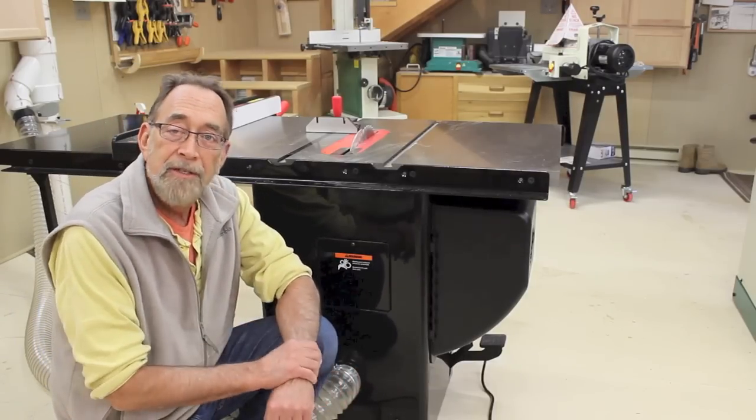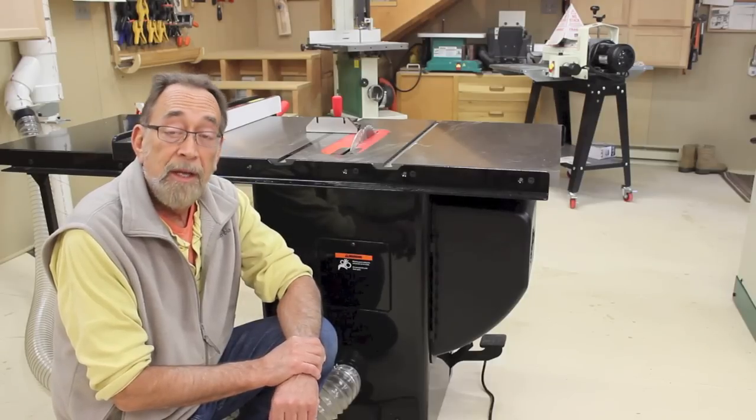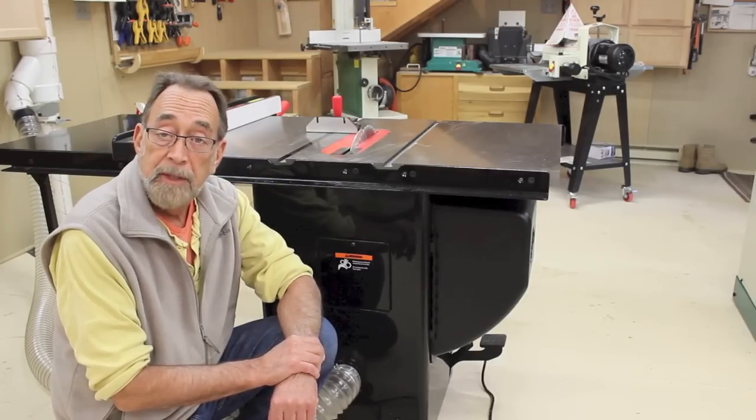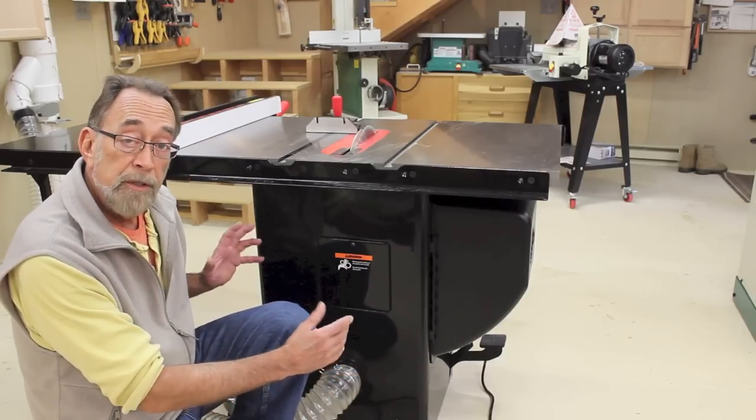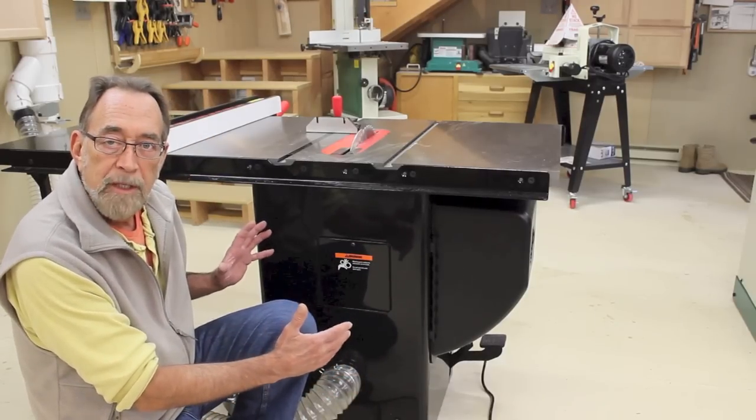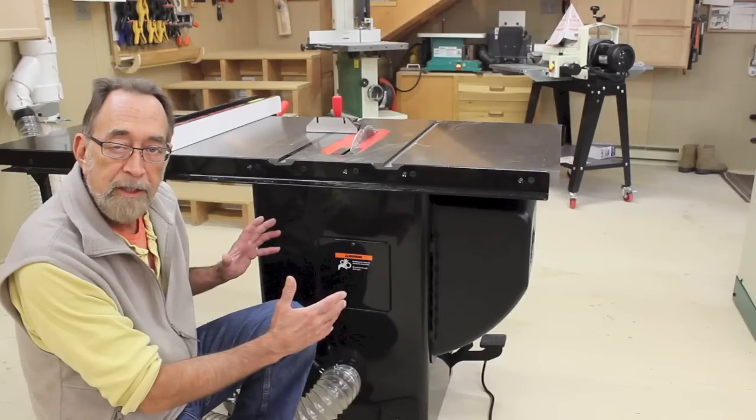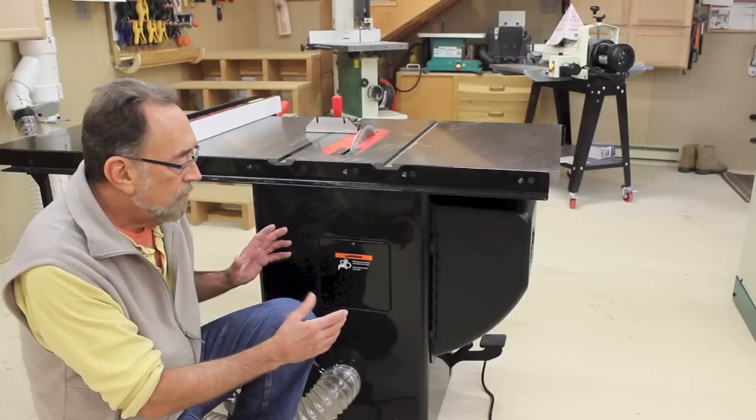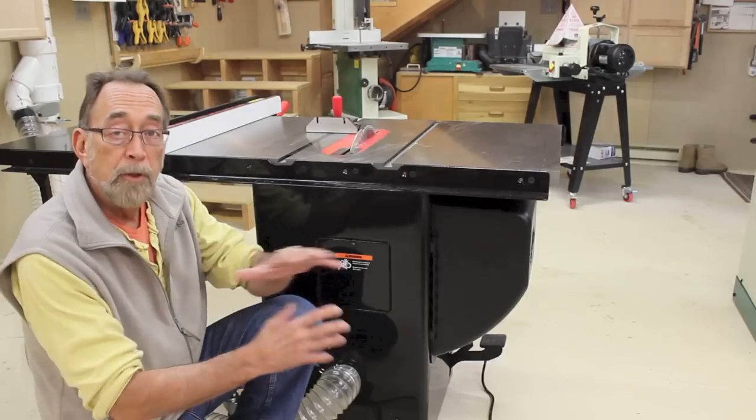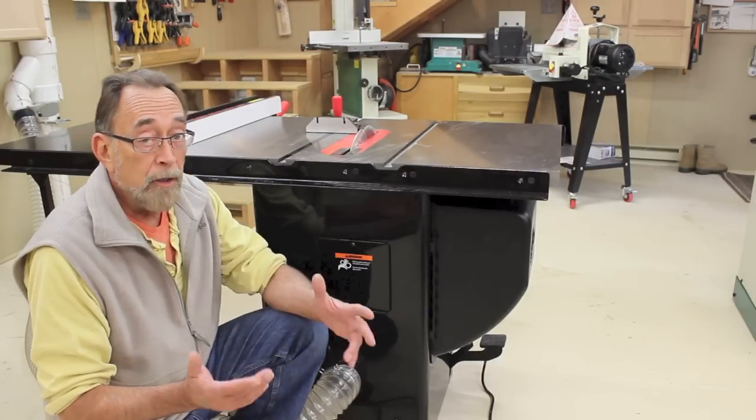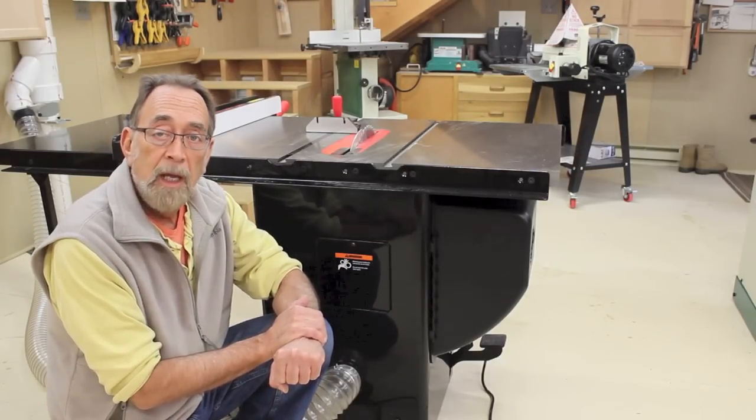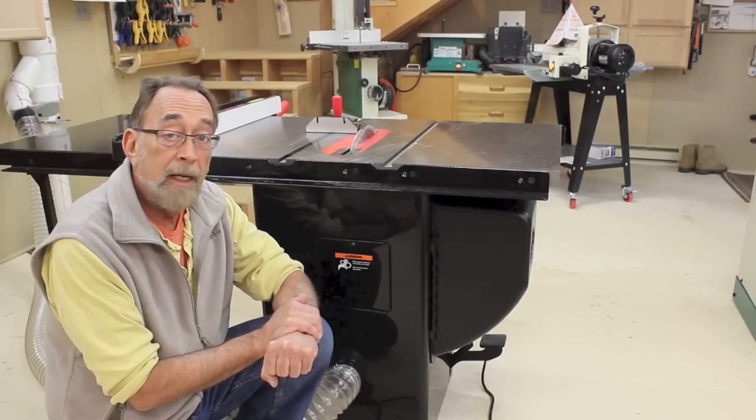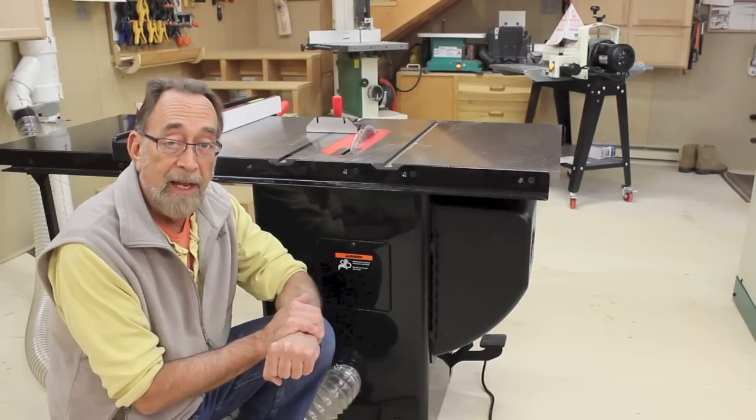If this really is the ultimate table saw, then I want to build the ultimate outfeed table. I'd like for it to have storage underneath. I don't want to waste that space under the outfeed table. And I'd like for it to be mobile so I can move it around in the shop. And, of course, because I want to also use it as an assembly table, I need it to be absolutely level and absolutely dead flat.